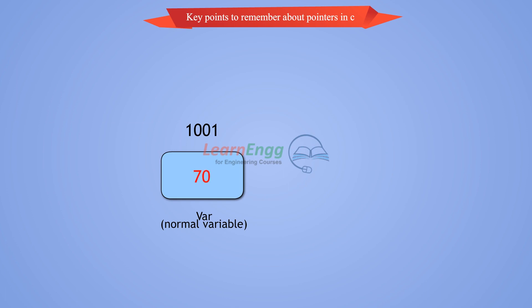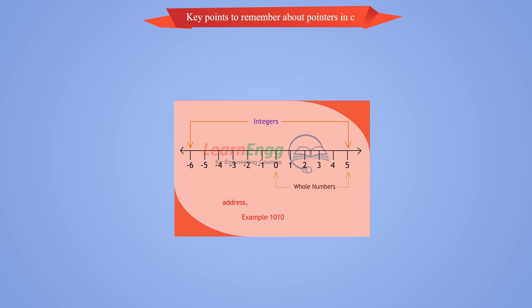Key points to remember about pointers in C: Normal variable stores the value whereas pointer variable stores the address of the variable. C pointer always be a whole number, i.e., address example 1010.